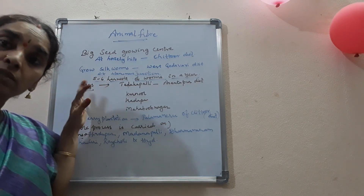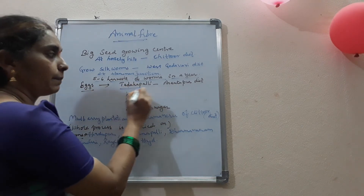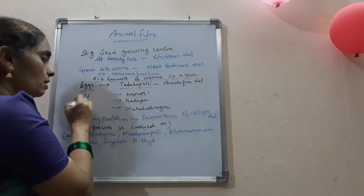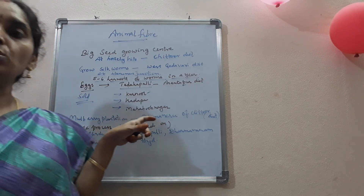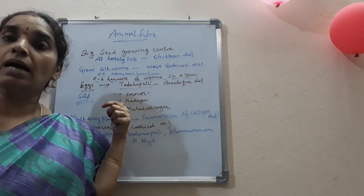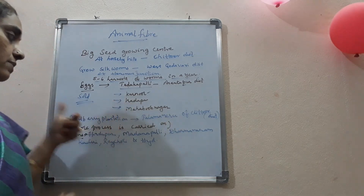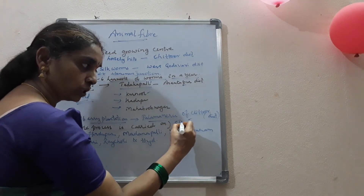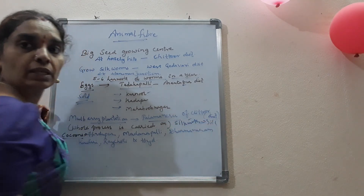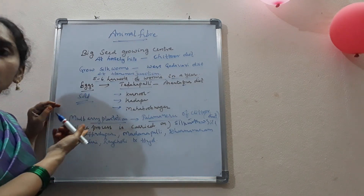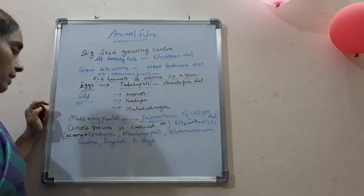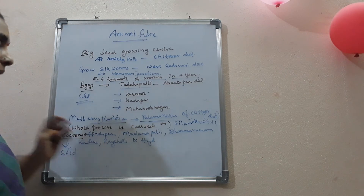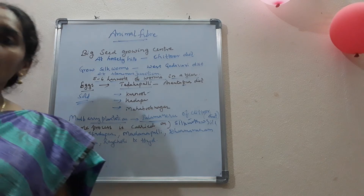Eggs are being sold in places like Tadakapalli of Anantapur district, Kurnool district, Kadapa, and Mahbubnagar. Next, the mulberry plantation — where eggs transform into the larval stage — can be seen in Palmaner of Chittoor district. The whole process starting from the silk moth to the manufacture of silk goes on in Palmaner, Chittoor district. Cocoons sold for manufacture of silk are found in places like Hindupur, Madanapalle, Dharmavaram, Kadiri, Rayachoti, and Hyderabad.